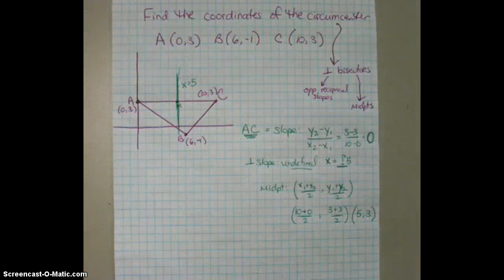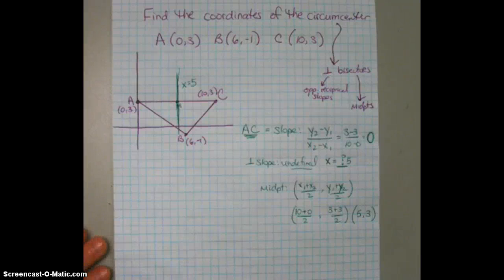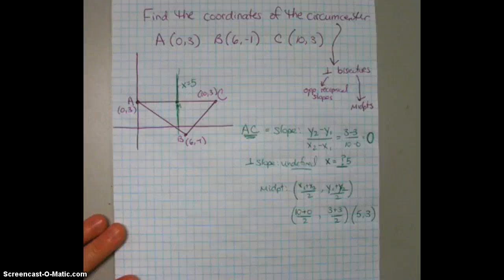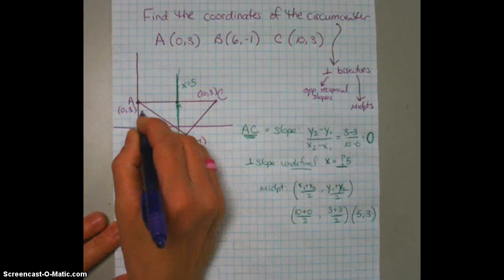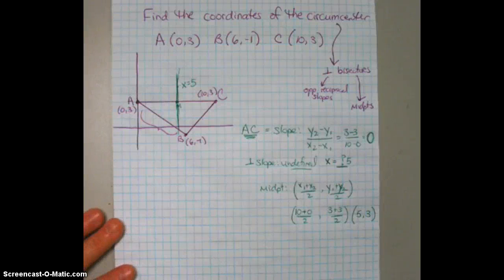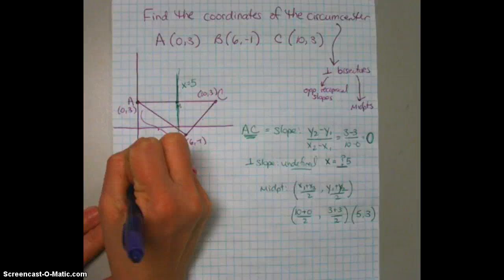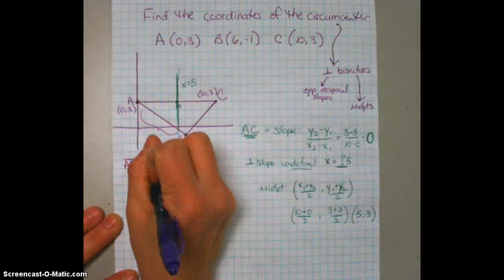Okay, so switching colors, we now want to find the equation of another line. So you can pick either side that's left of the triangle. I'm going to pick, let's see, let's do AB. I'm going to look at AB just because I like using a 0 sometimes. So if I'm going to be looking at AB, I first need to find the slope of AB.